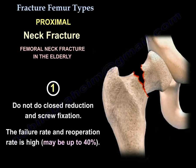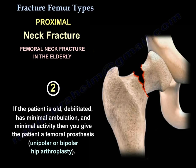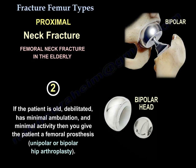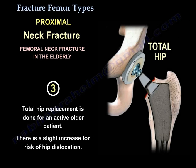Number two: if the patient is old, debilitated, with minimal ambulation and minimal activity, then you give them a femoral prosthesis such as unipolar or bipolar. Number three: we do a total hip replacement for an active older patient, though there is a slight increased risk for hip dislocation.